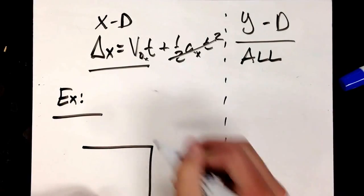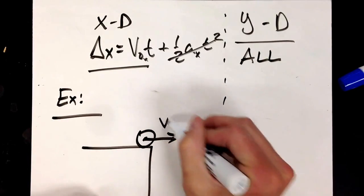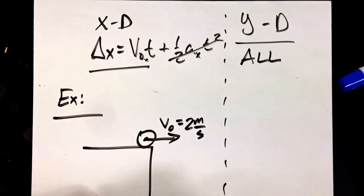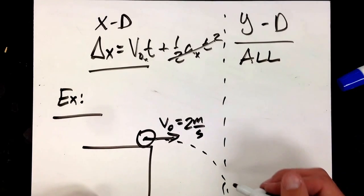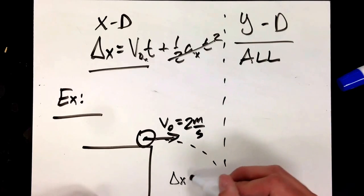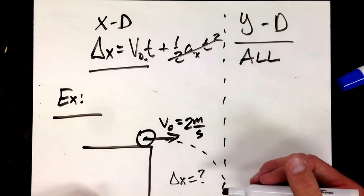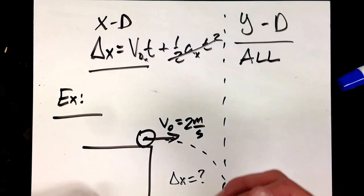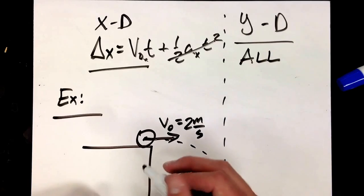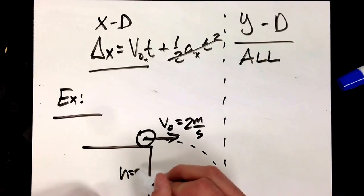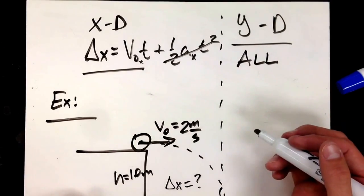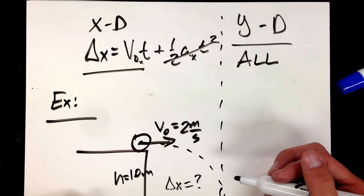Let's say I have a flat surface, and I have a ball rolling off of that surface with an initial velocity of two meters per second. It rolls off and lands a certain distance away — a certain delta x — and that's what I want to find: how far away from the table will that ball land? A key piece of information I'll need is the height. Let's say the height is one meter — a one-meter-high table, ball rolls off at two meters per second.